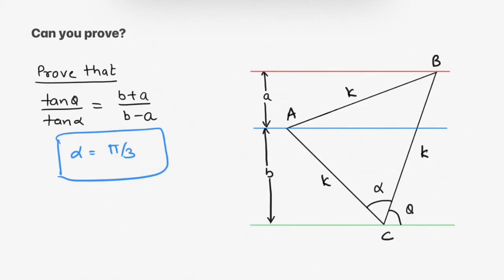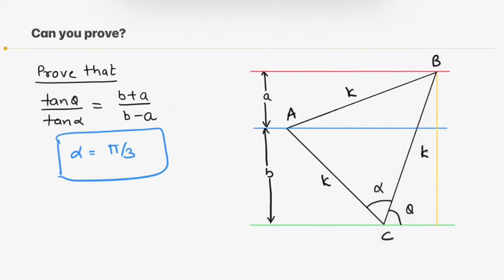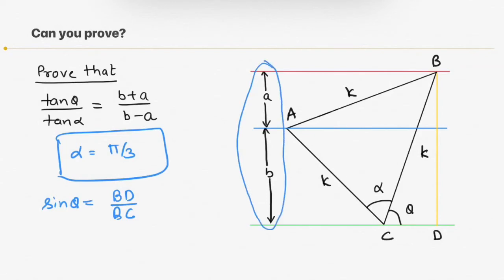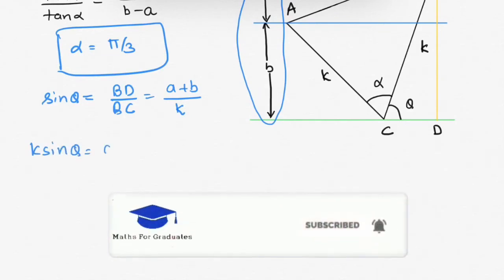Now let me drop a perpendicular from point B onto the green line. This is the perpendicular from point B, and suppose this point is point D. Now finding sin theta in triangle BCD: sin theta equals perpendicular over hypotenuse. Here the perpendicular is BD and hypotenuse is BC. The length of BD is A plus B, and BC is K. So from this equation K sin theta equals A plus B.